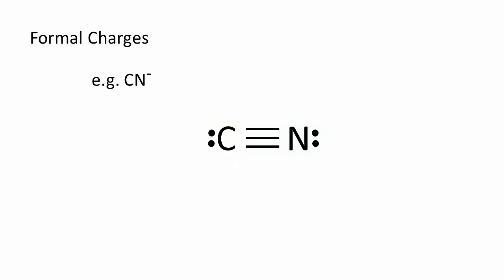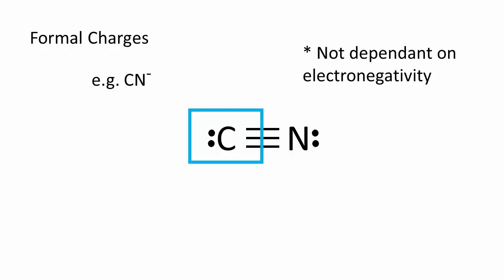With formal charges, shared electrons are shared perfectly, despite the nitrogen atom being more electronegative. Therefore, three electrons of the triple bond go to the carbon, and three to the nitrogen.